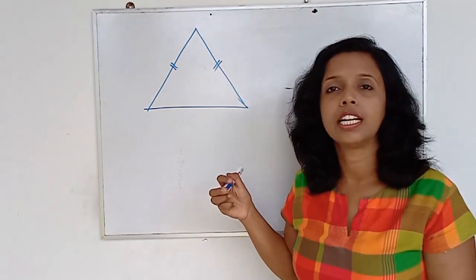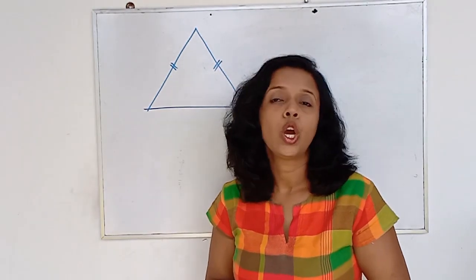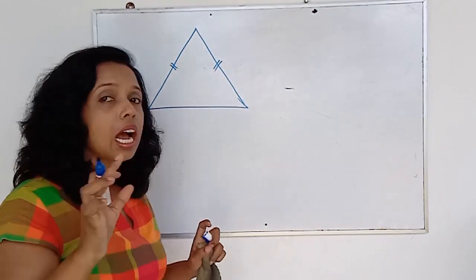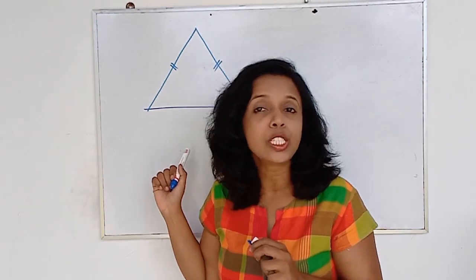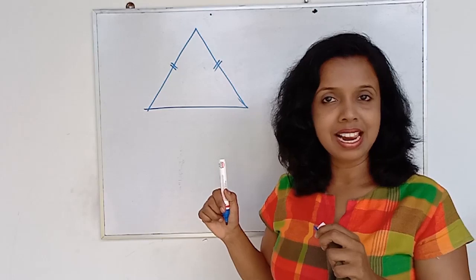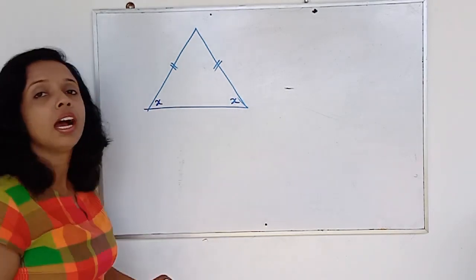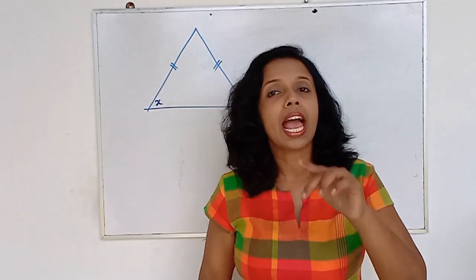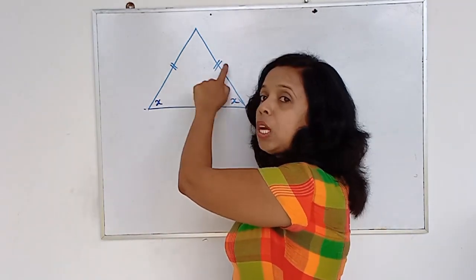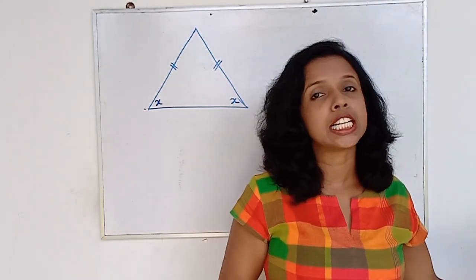When you look at this figure — again it's a triangle — the main feature is that only two sides are equal in length. This special triangle is called an isosceles triangle. In an isosceles triangle, two sides are equal, and the angles at the base of those equal sides are equal to each other.